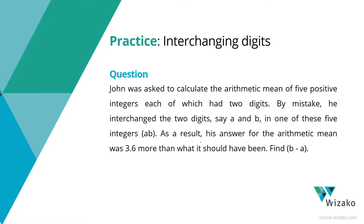John was asked to calculate the arithmetic mean of five positive integers, each of which had two digits. So he had to find the average of five two-digit numbers. By mistake, he interchanged the two digits, say A and B, in one of these five integers.